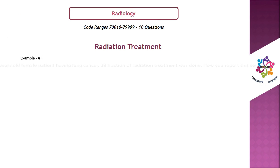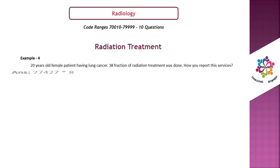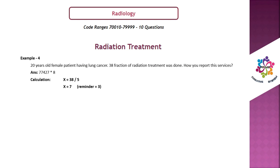Example 4: 38 fractions of radiation treatment. The answer is 77427 × 8. Calculation: x = 38 ÷ 5 = 7, remainder = 3. Since remainder is 3 or beyond, apply x = x + 1 = 7 + 1 = 8. Answer = 77427 × 8.